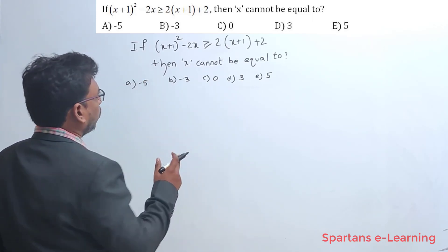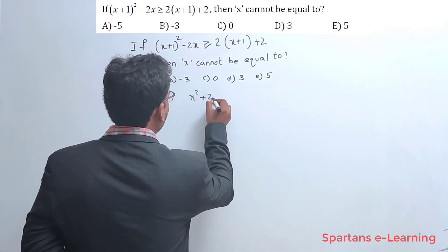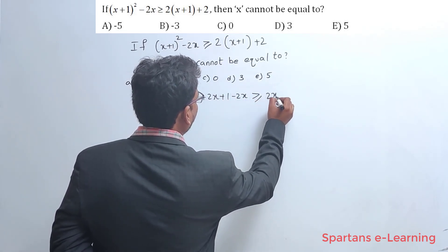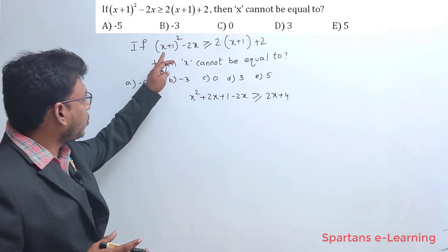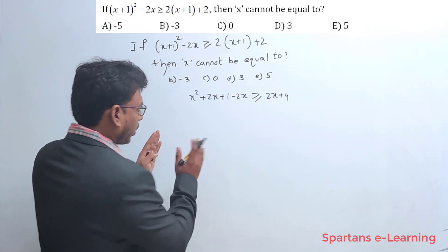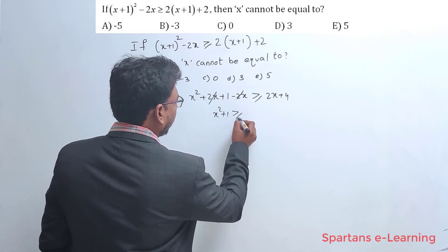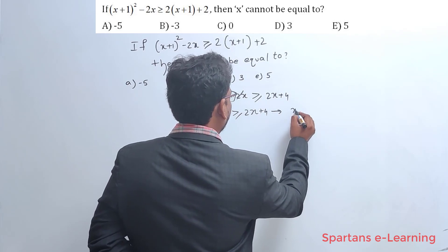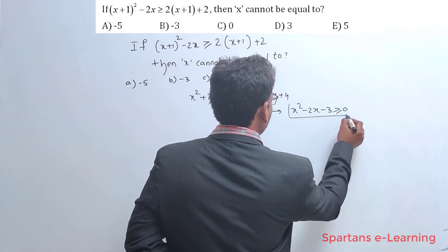The question says (x+1)² - 2x, so let us expand that. It will become x² + 2x + 1 - 2x ≥ 2x + 4. Even in your exam, don't try to write all these steps — you can expand this mentally and write in the shortest form. The 2x terms cancel, so you directly get x² + 1 ≥ 2x + 4. Simplifying further: x² - 2x - 3 ≥ 0.